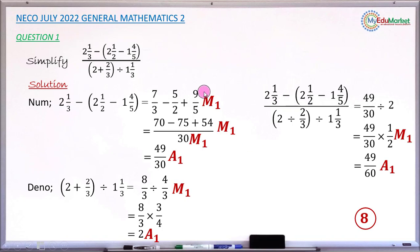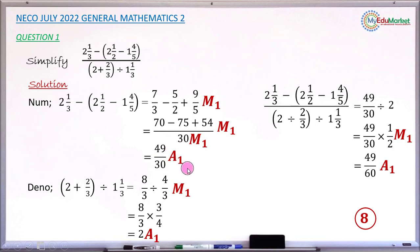The very first mark is a method mark for expanding the bracket and changing mixed fractions to improper fractions — if done correctly, you earn that method mark. The next method mark is for adding the three fractions using LCM correctly. When you arrive at the final answer of 49 over 30 as the simplified numerator, you earn an accuracy mark.